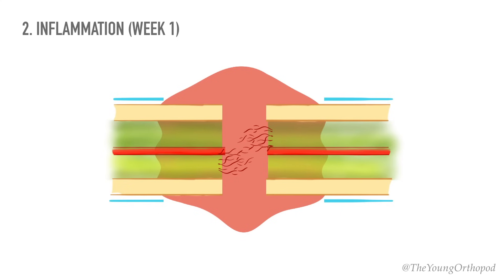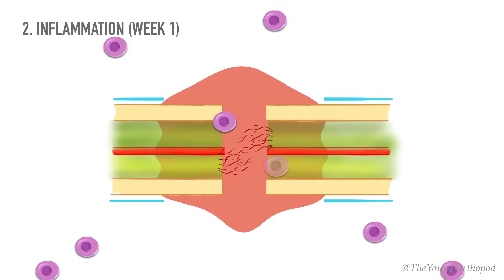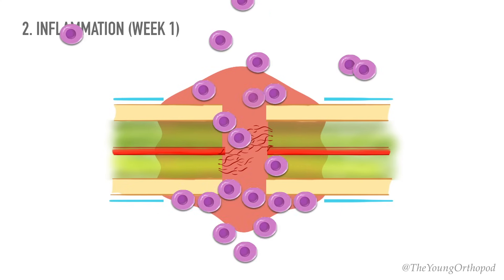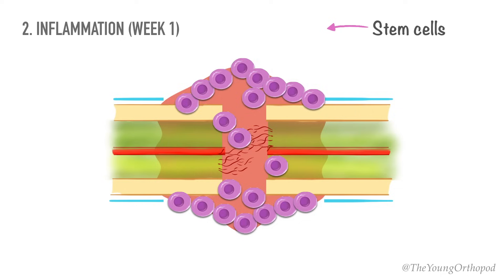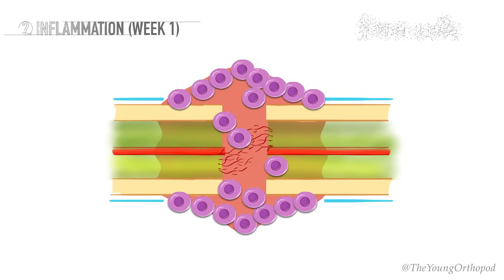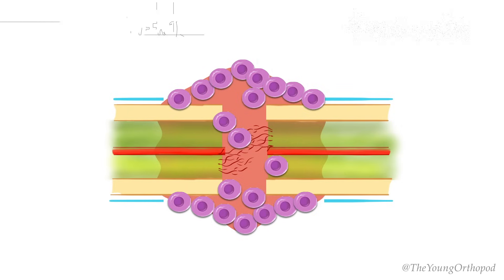By the end of this phase, the mesenchymal stem cells start to proliferate. These stem cells are derived from the periosteum, the breached medullary canal, and the surrounding muscles.